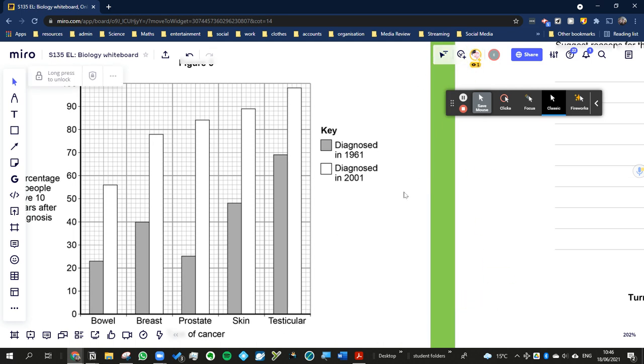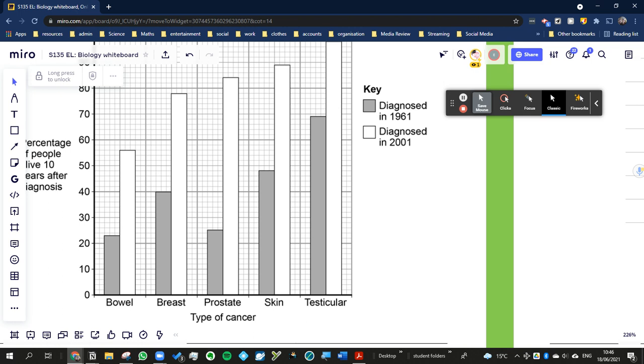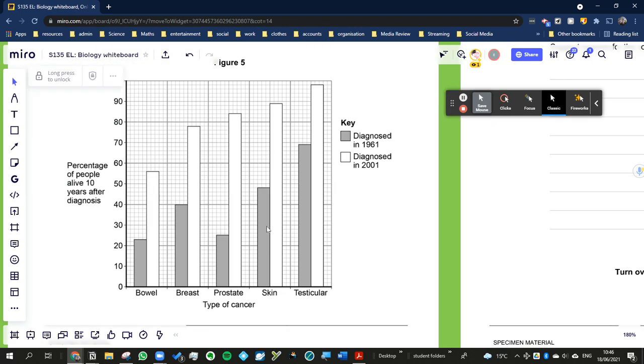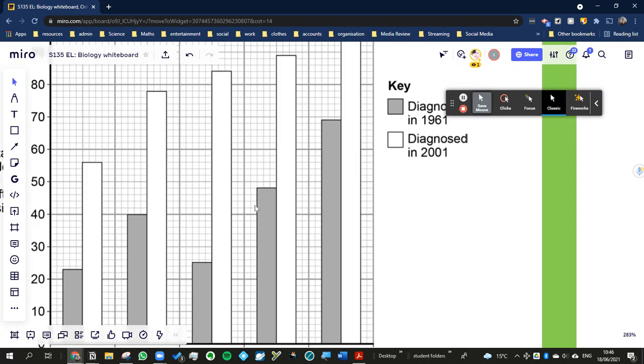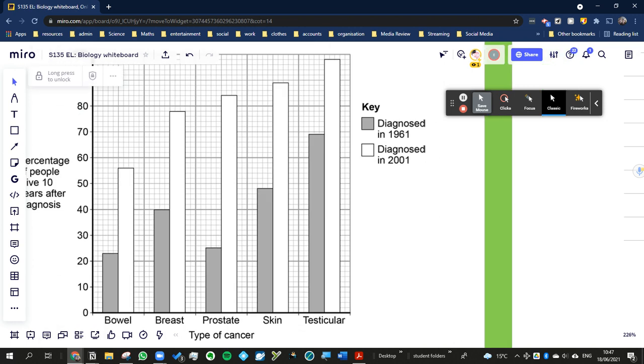The chance of you surviving skin cancer after 40 years back in 1961 was this number here. By following it across we can see it's on the fourth division, so there are five divisions for every 10, so each division must be 2. So it's going to be 48%. The chance of you surviving after 10 years of skin cancer in 1961 was 48%.